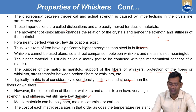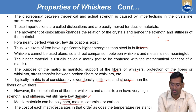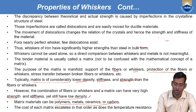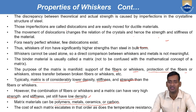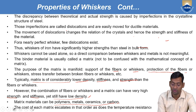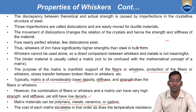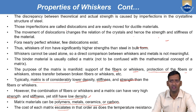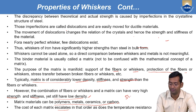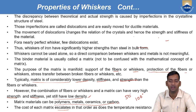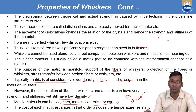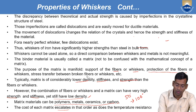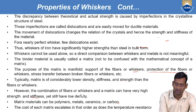Matrix material can be polymer, metal, ceramic, or carbon. The cost of each matrix escalates in that order, as does the temperature resistance. So whatever material has higher temperature resistance, it has higher cost: a material that can sustain up to 50°C will cost less, one sustaining 100°C will cost more, and one sustaining 1000°C will have too high a cost compared to the others.